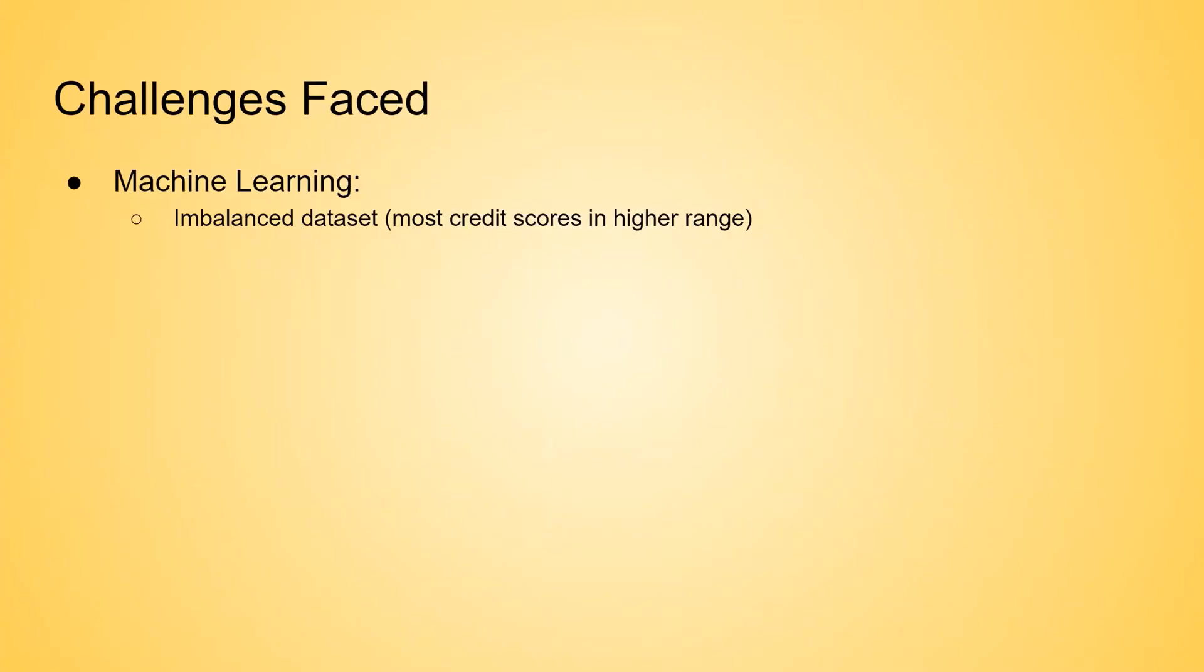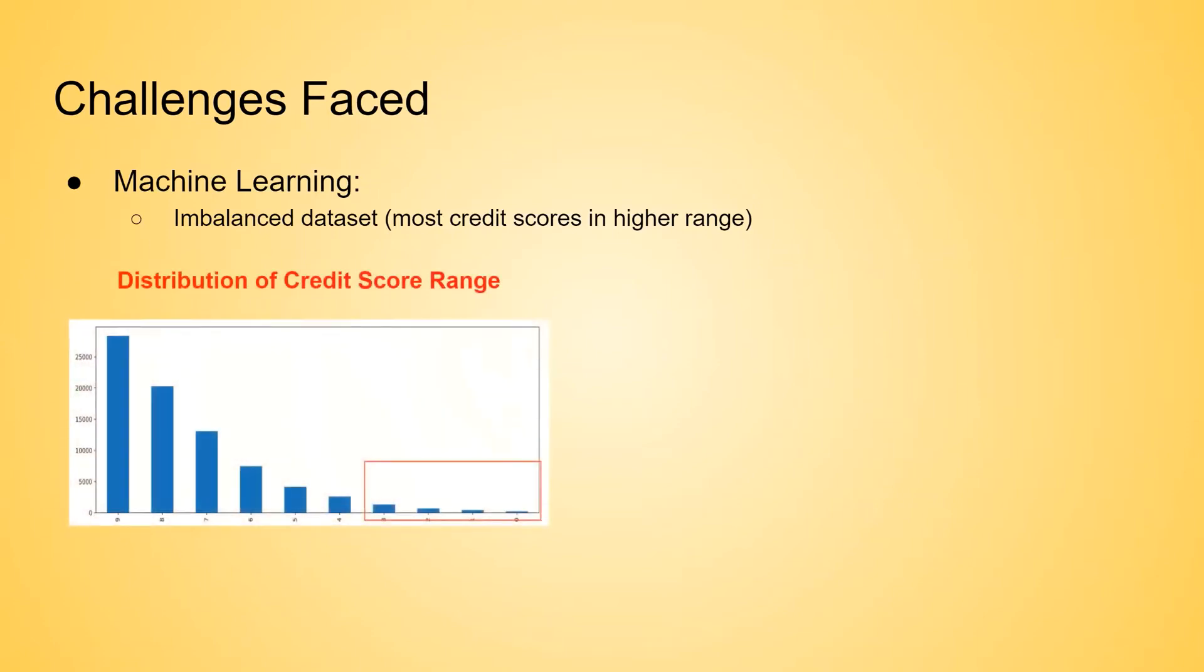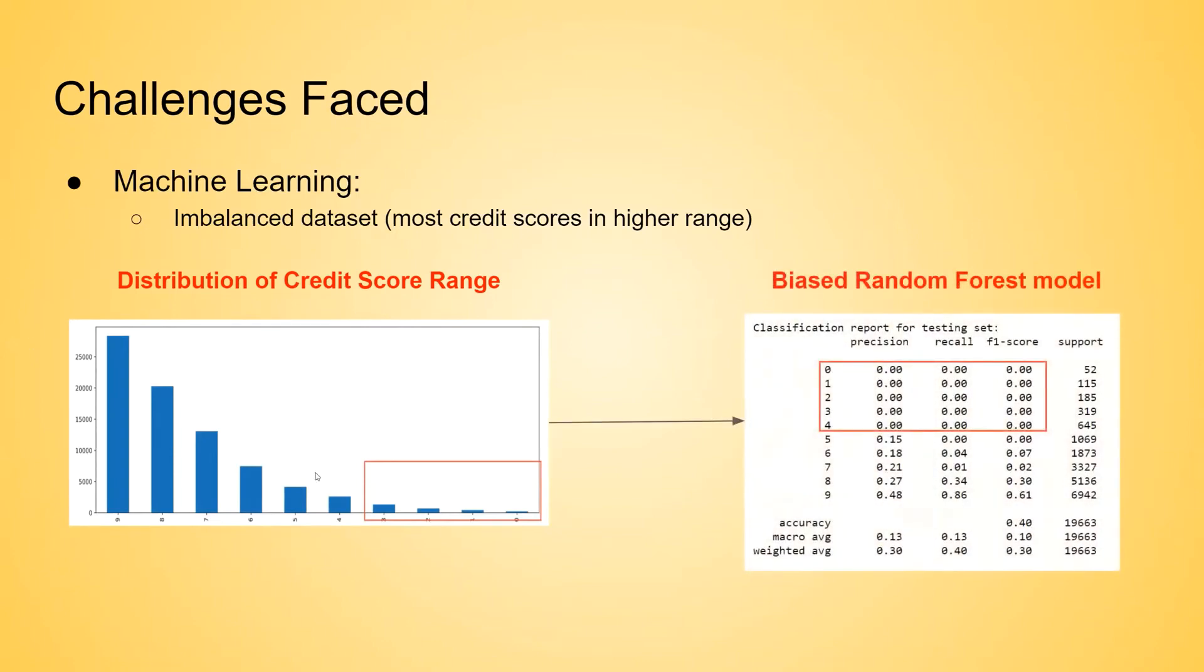The first challenge we faced was dealing with imbalanced data. This is the distribution of credit score range. The majority data comes from range number 6 to range number 9. Range number 0 to range number 3 have much less sample size than other ranges. So we can tell that this data is imbalanced. You can imagine that when we train a model, we pass the training set into the model so that the model can learn from the training set. Since the data is imbalanced, it's fairly likely to produce a biased model. This is the result from this imbalanced dataset. Range number 0 to range number 4 are getting all zeros, and the overall accuracy was only 40%. So the model never learned from the minority data, which means when we want to make a prediction, we can never predict the range number 0 to range number 4.